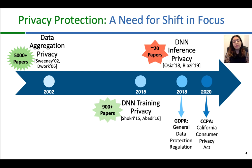Currently, with the deployment of deep neural networks all around us, DNN inference privacy has been gaining attention. Given how we use deployed models such as voice assistants or camera face apps, it is important to make sure that the data we send to these service providers is not misused. There are overall around only 20 papers on this subject, and there is lots of room for improvement.